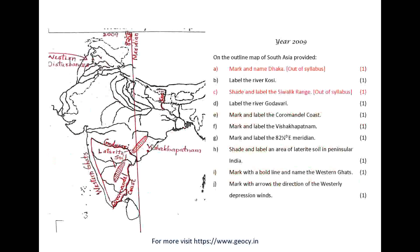Year 2009. On the outline map of South Asia provided: A. Mark and name Dhaka — out of syllabus. B. Label the River Kosi. C. Shade and label the Shivalik Range — out of syllabus. D. Label the River Godavari. E. Mark and label the Coromandel Coast. F. Mark and label Visakhapatnam. G. Mark and label the 82°30'E Meridian. H. Shade and label an area of laterite soil in Peninsular India. I. Mark with a bold line and name the Western Ghats. J. Mark with arrows the direction of the Westerly Depression winds.